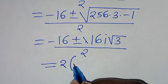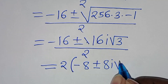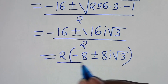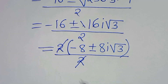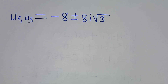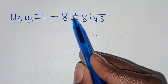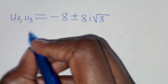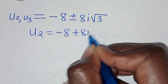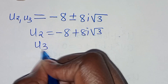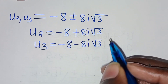Let's simplify: we have minus 8 plus or minus 8i square root of 3, everything divided by 2. Simplifying, 2 cancels. So u2 is equal to minus 8 plus 8i square root of 3, and u3 is equal to minus 8 minus 8i square root of 3.